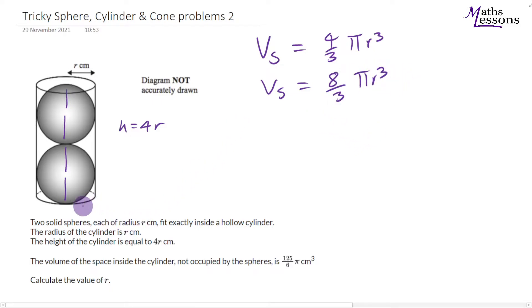Okay, now we're going to do the volume of the cylinder. So the volume of our cylinder is equal to the base area, pi r squared, times by the height. Now the height is 4r. So that's going to give me 4 pi r cubed. Now we know this space not occupied. So this one minus this one must equal this value.